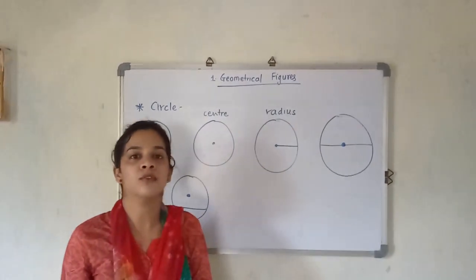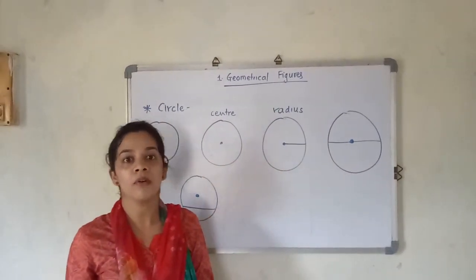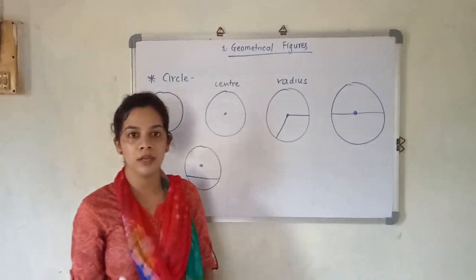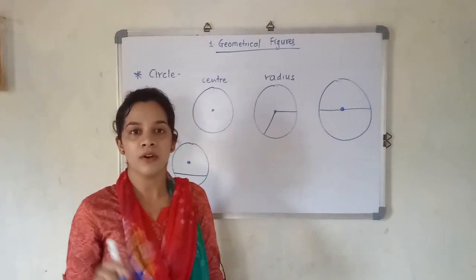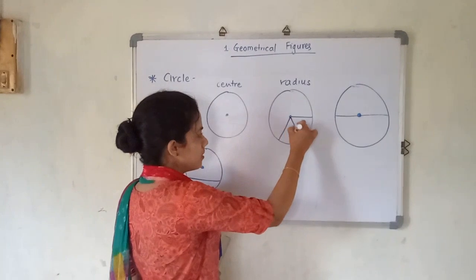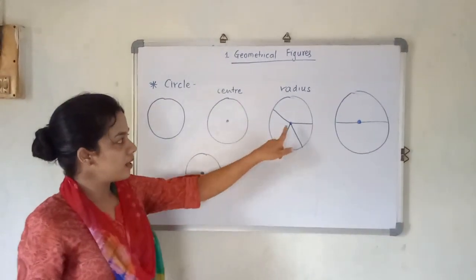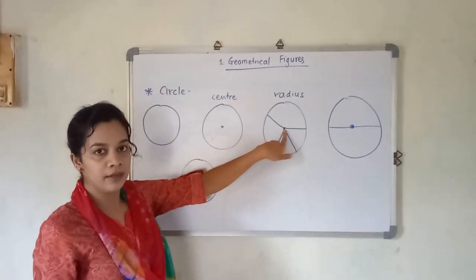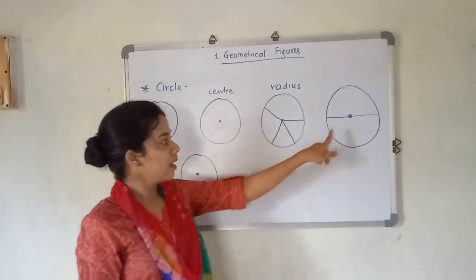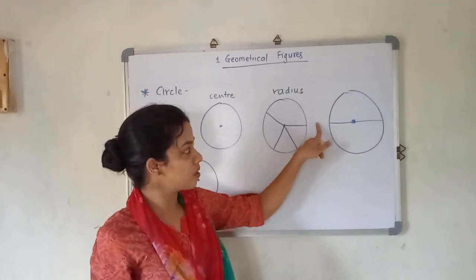Is there only one radius? No — radius can be infinite; you cannot count them. I can draw one more radius here. The definition: a radius must start from the center and touch any part of the circle. This is also one radius, and this is also one radius. So the line which starts from the center and joins the other side of the circle is called the radius.